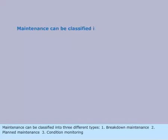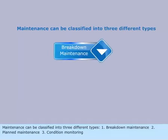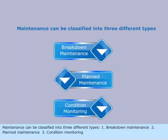Maintenance can be classified into three different types: 1. Breakdown maintenance, 2. Planned maintenance, 3. Condition monitoring.